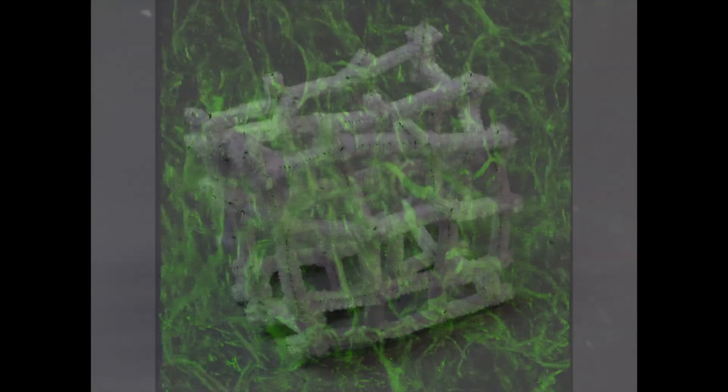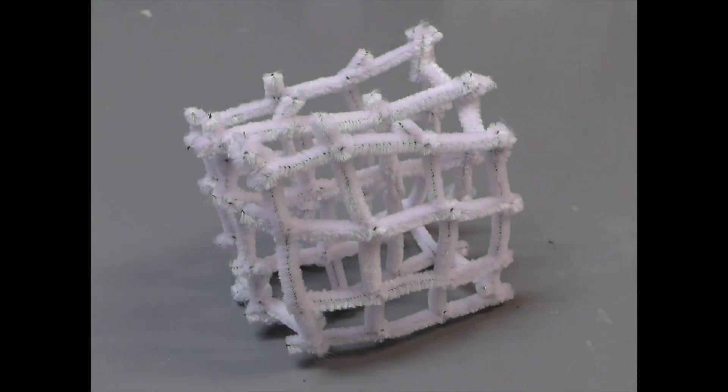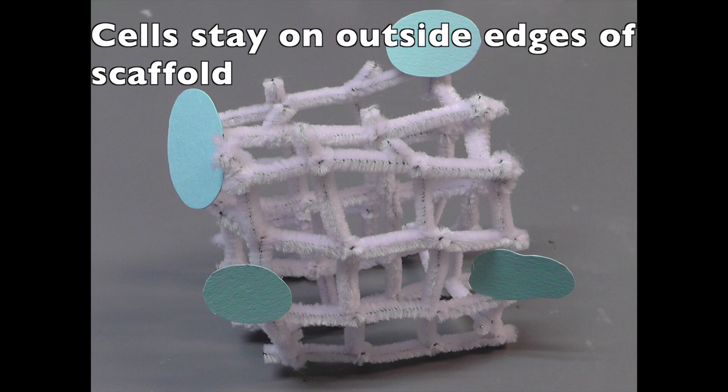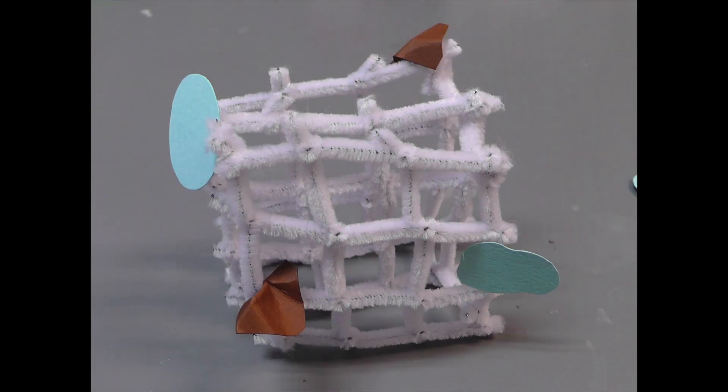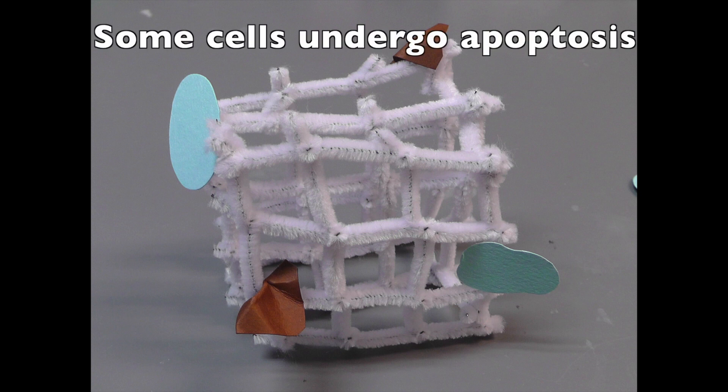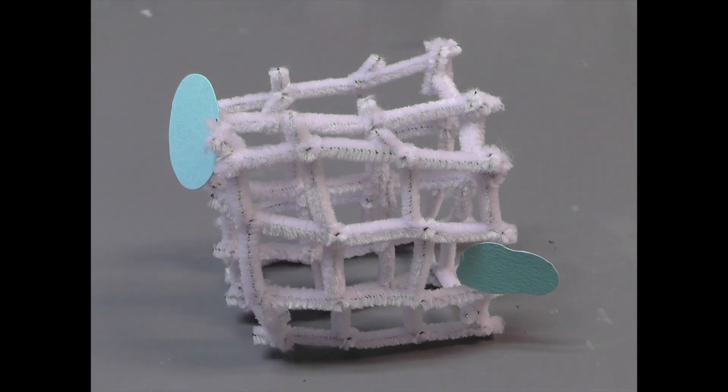However, there are a number of problems associated with current collagen-based scaffolds. Currently, when cells are loaded onto a collagen scaffold, most cells remain at the edge of the scaffold and fail to migrate into its core. In the days that follow, a number of the cells undergo apoptosis, a form of cell death, and die.